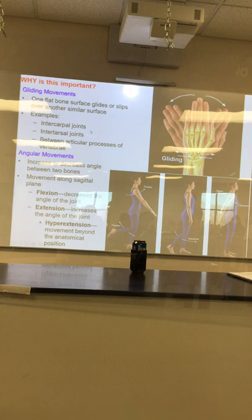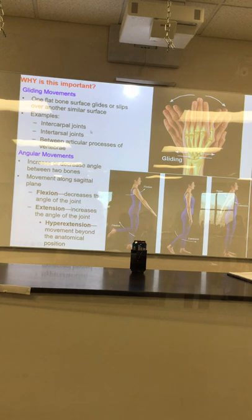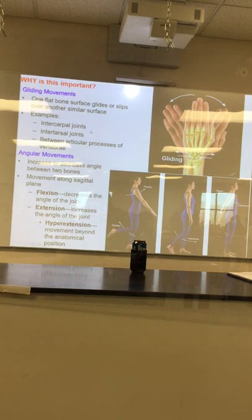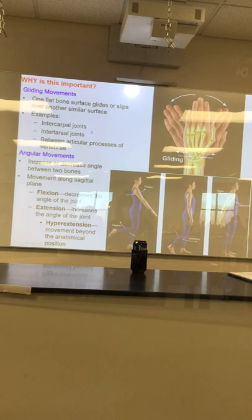These movements are how we judge general joint function. If somebody's got a weird hitch in the location — be it mechanical or muscular or what have you — we can use the degrees to which they move to better understand what's going on. We use this on a daily basis. So gliding movements: things gliding past one another.